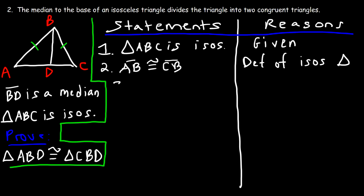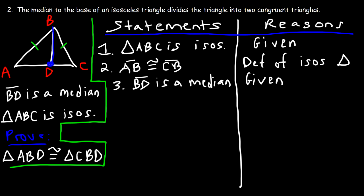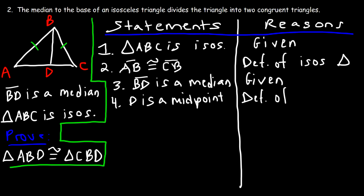Now we can move to the next given: BD is a median. A median is a line that extends from the vertex of a triangle to the midpoint of the opposite side. So in statement four we can say that D is a midpoint, and the reason is the definition of a median.